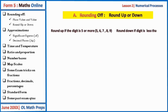Rounding up or rounding down together comprise what we call rounding off. So rounding off is made up of either rounding up or rounding down. We round up if the digit is five or more — that is, five, six, seven, eight, or nine. We round down if it is less than five — that is, zero, one, two, three, or four.